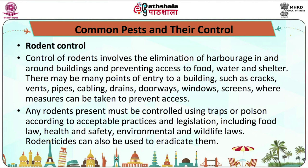Controlling rodents involves the elimination of harbourage in and around buildings and preventing access to food, water, and shelter. There are many points of entry to a building — such as cracks, vents, pipes, cabling, drains, doorways, windows, and screens — where measures can be taken to prevent access. Any rodent presence must be controlled using traps or poison according to acceptable practices and legislation, including food law, health and safety, environmental, and wildlife regulations. Rodenticides can also be used to eradicate them.